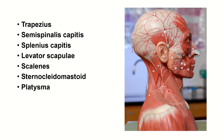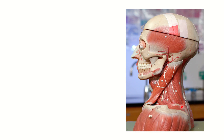Sternocleidomastoid, partially covered by platysma. Looking at the deeper lateral view, you don't see as many muscles here. The important one is the temporalis — the chewing muscle, muscle of mastication. The pterygoid muscles are around here; the medial and lateral pterygoids are deeper in this region.